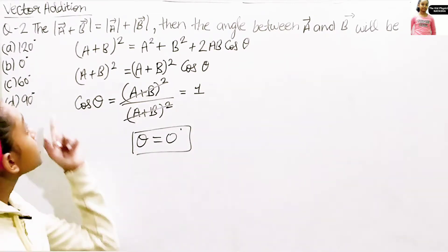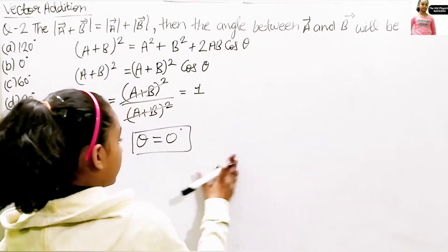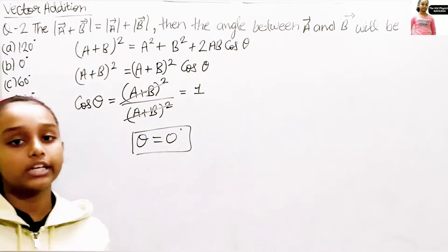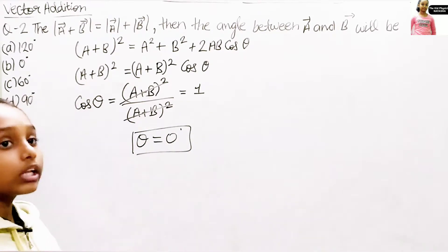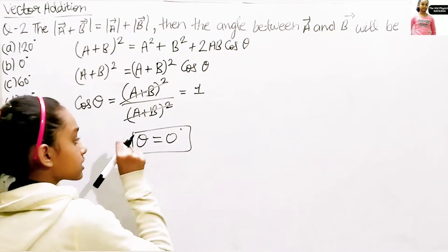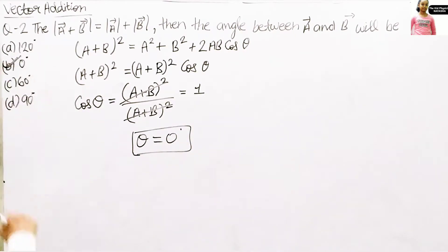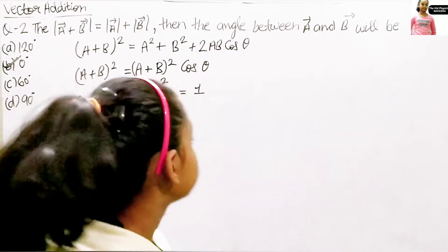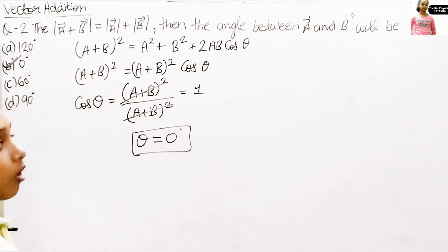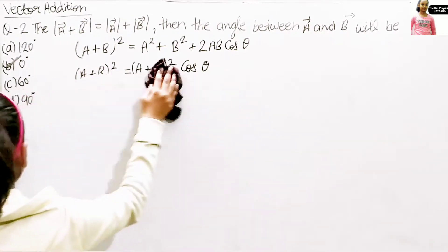In the previous question the answer was cos θ = −1/2, giving θ = 120 degrees. But in this question, cos θ = 1, so our answer is 0 degrees — that's option B, 0 degrees.